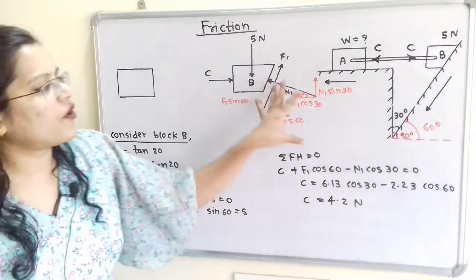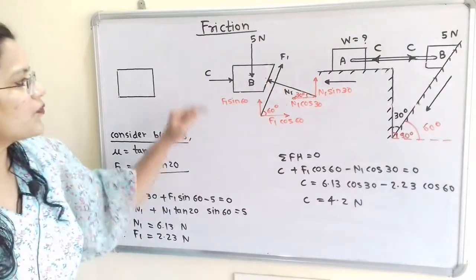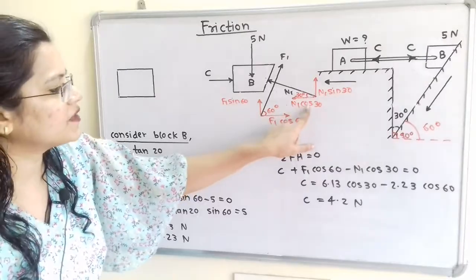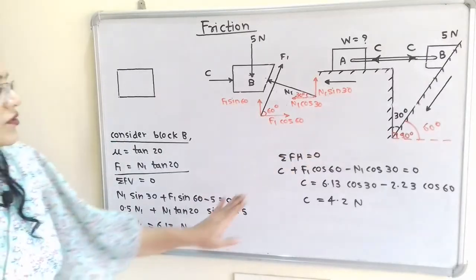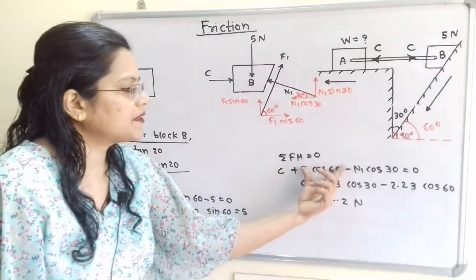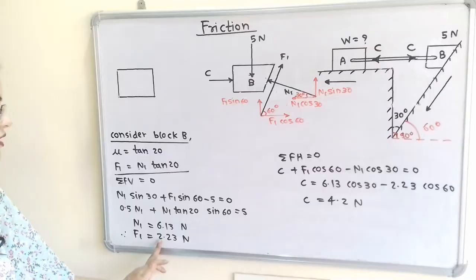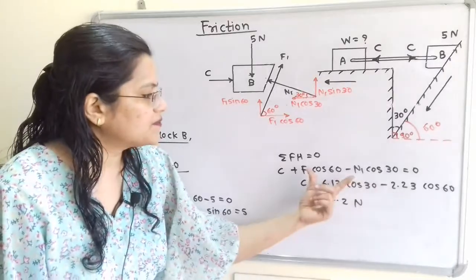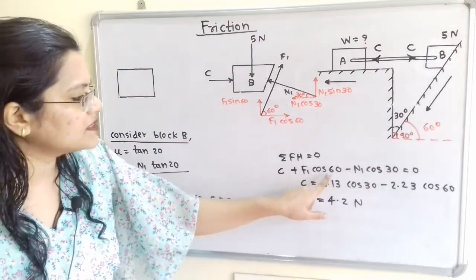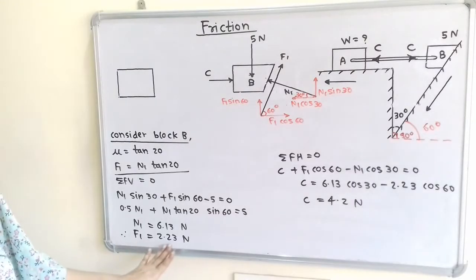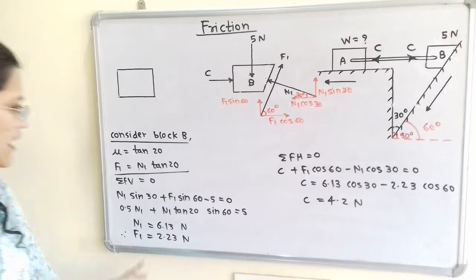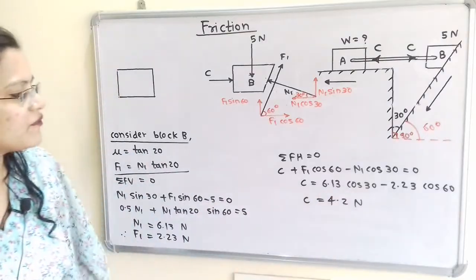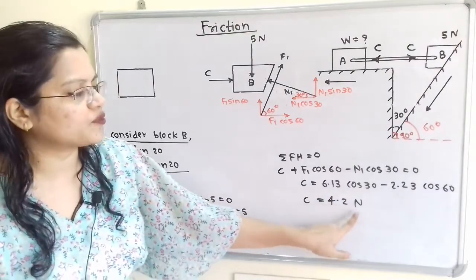Taking summation of all horizontal forces equal to zero, with C directed towards the right: C + F1·cos60 − N1·cos30 = 0. Transferring terms to the right hand side with known values F1 = 2.23 N and N1 = 6.30 N: C = N1·cos30 − F1·cos60 = 6.30·cos30 − 2.23·cos60. Solving, C = 4.2 N.